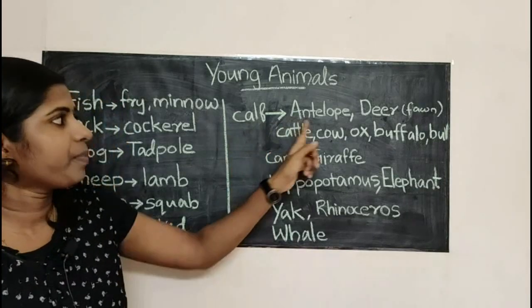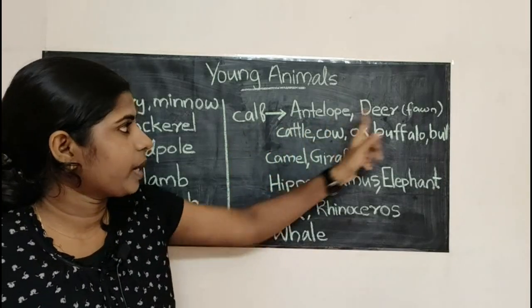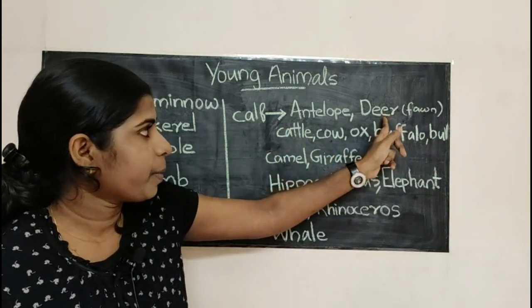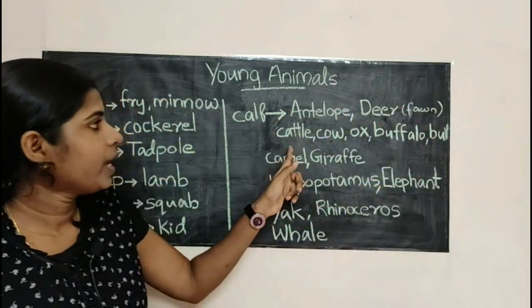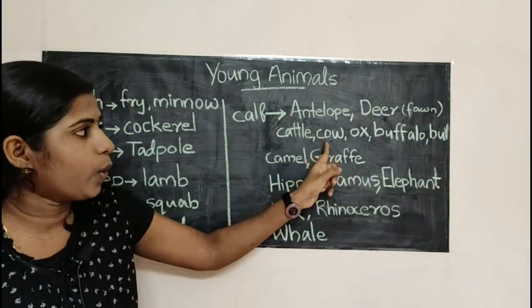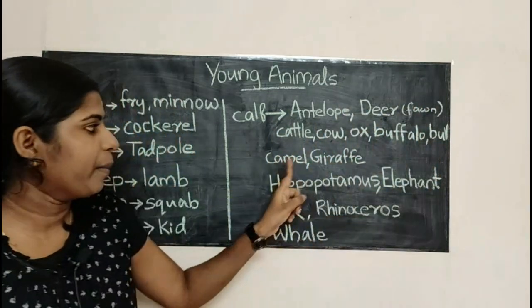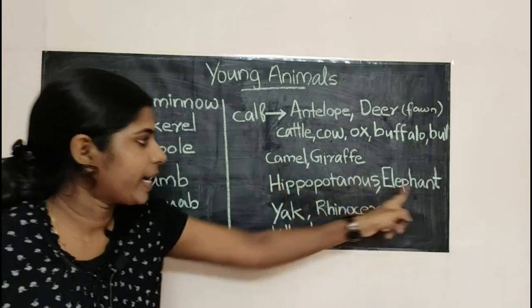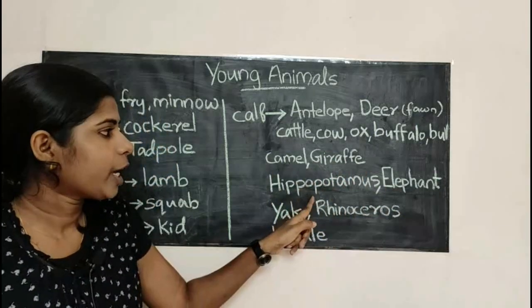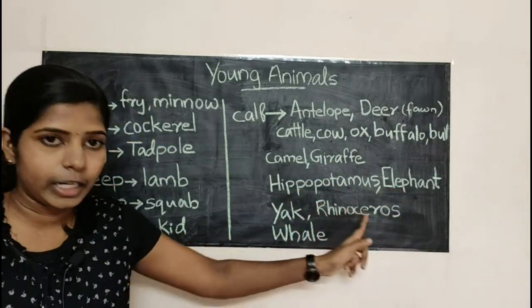This is antelope, deer. So, deer, fox, buffalo, bull, camel, giraffe, hippopotamus, elephant, yak, rhinoceros.